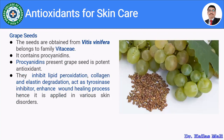The next antioxidant for skin care is grape seed. The seeds are collected from Vitis vinifera, belonging to family Vitaceae. It contains procyanidins, which are potent antioxidants with free radical scavenging activity. They inhibit lipid peroxidation, stimulate collagen and elastin secretion, act as tyrosinase inhibitors, enhance the wound healing process and hence are applied in various skin disorders. Grape seed products are present in many skin care cosmetic products.